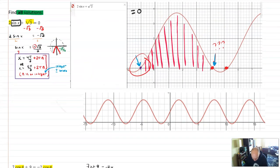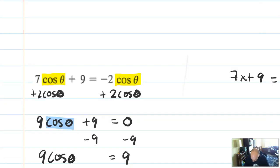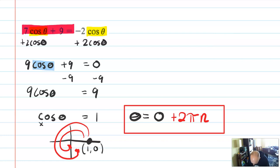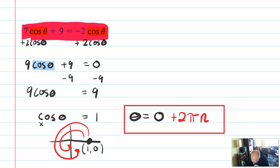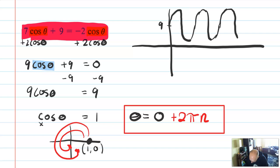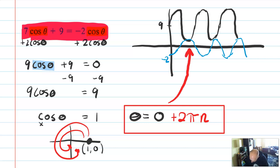This is a situation where there was only one solution for every trip around the circle — every 2π. That happens sometimes whenever you get a 1, minus 1, or 0: you'll have only one solution expression instead of two. The first problem had two solutions and needed two expressions, but this one needed only a single expression. Also worth noting: we were finding the intersection of two cosine graphs — 7 cosine theta plus 9 and negative 2 cosine theta — and they intersect at π and 2πn.